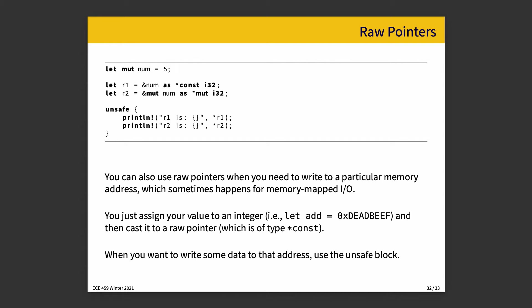Here's how we would do it: we declare `let num = 5`, then create raw pointers `r1` and `r2` — an immutable one and a mutable one. To dereference them we use the unsafe block, and dereferencing looks much like in C or C++ using the dereference operator. When creating the raw pointers, we use the reference operator and the `as` keyword to cast — either to `*const i32` or `*mut i32`. You can also use raw pointers to write to a particular memory address, for example `let address = 0xDEADBEEF` cast to a raw pointer, which is how you do memory-mapped IO in Rust.